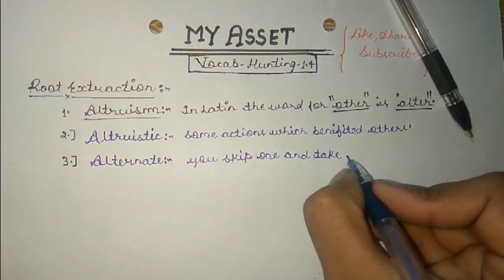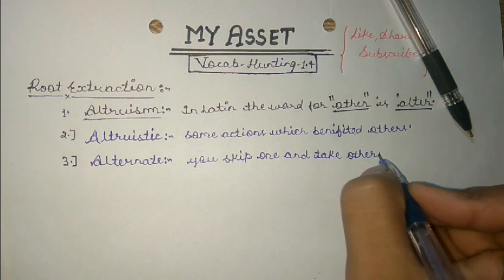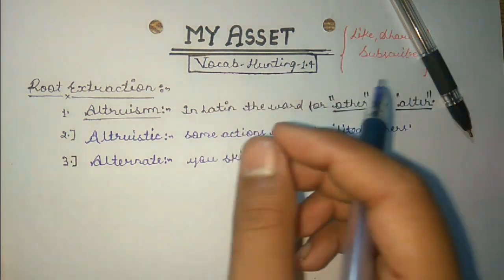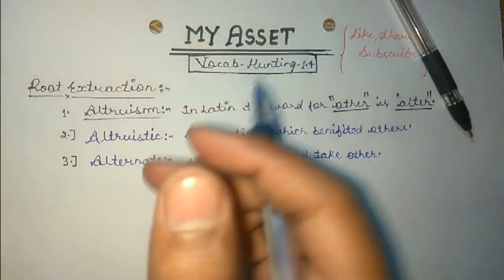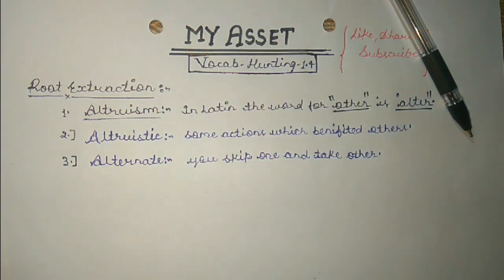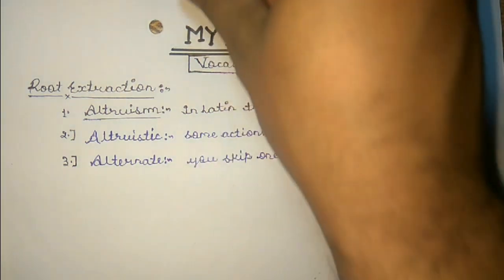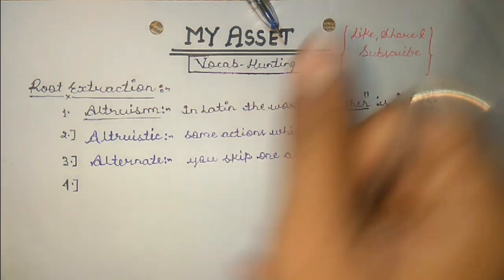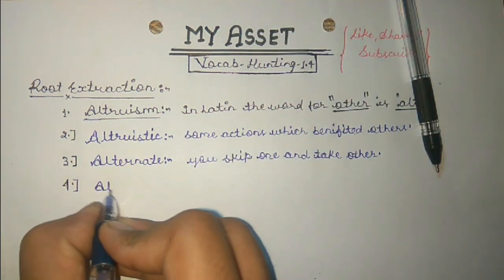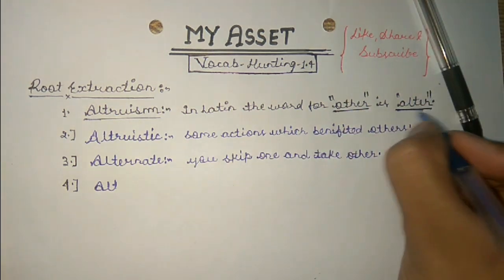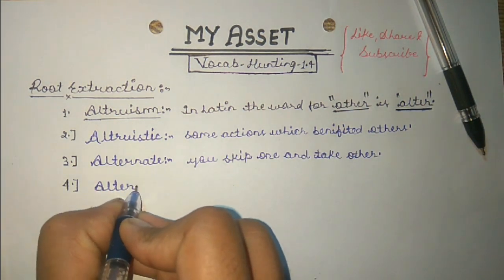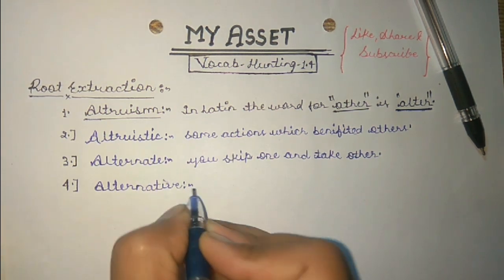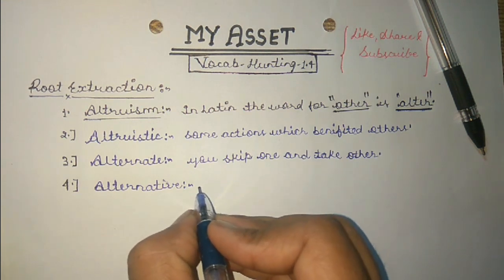There is nothing like rocket science behind vocabulary — if you are strong in root extraction, then vocabulary is on your fingertips. The next word, again derived from the same Latin root alter, is 'alternative.' The meaning is simple: you have no other choice.